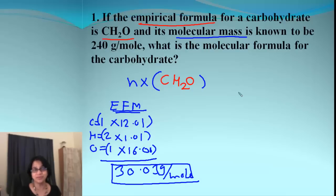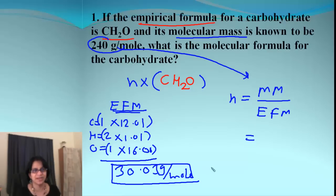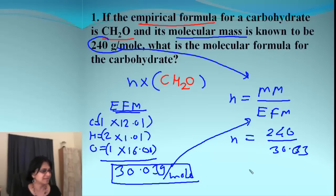We know that n is simply the molar mass divided by empirical formula mass. The molar mass is 240 and the empirical formula mass is 30.03. Let's simply divide that and see what happens. We end up getting close to 8 as the answer.